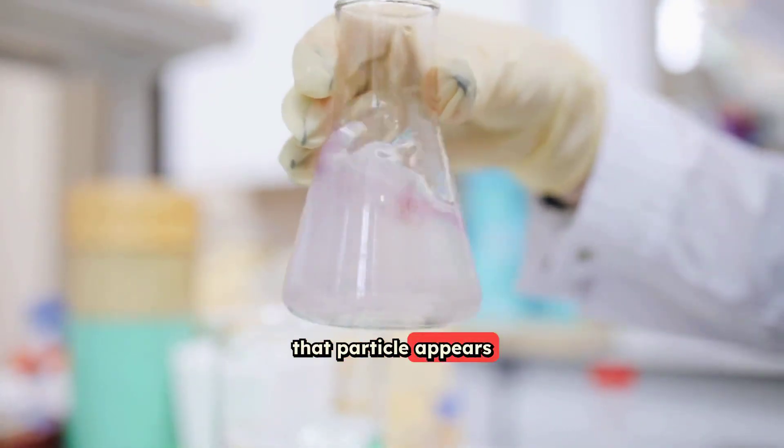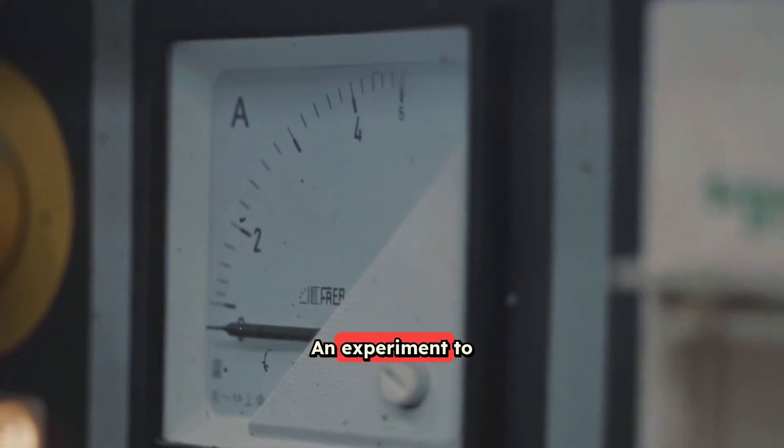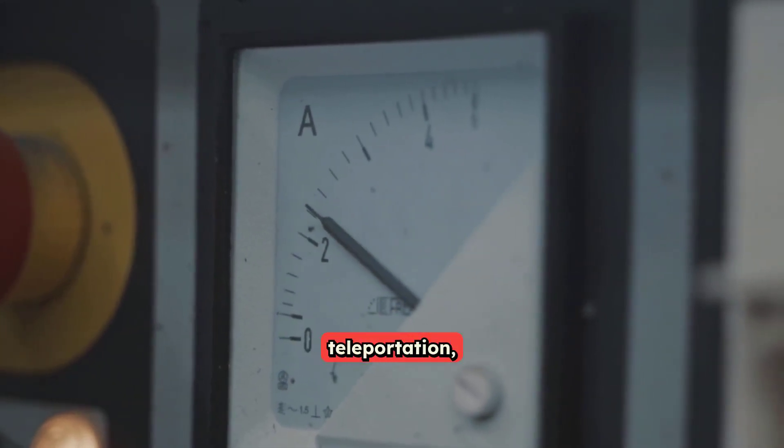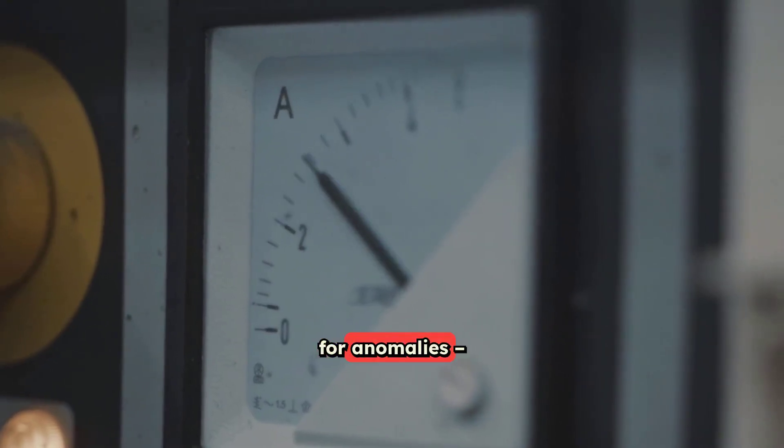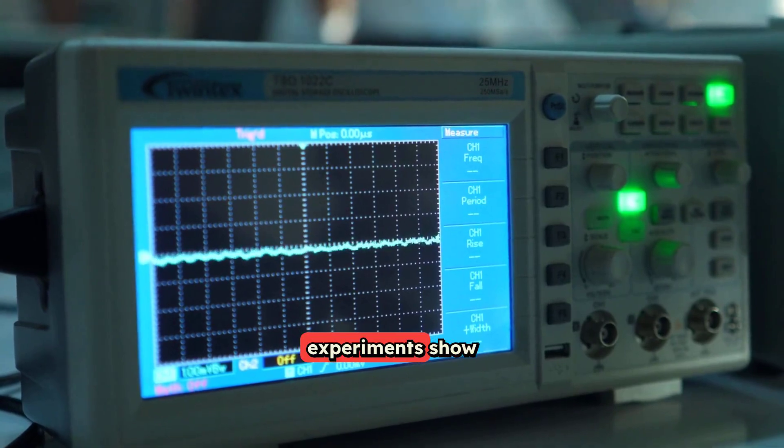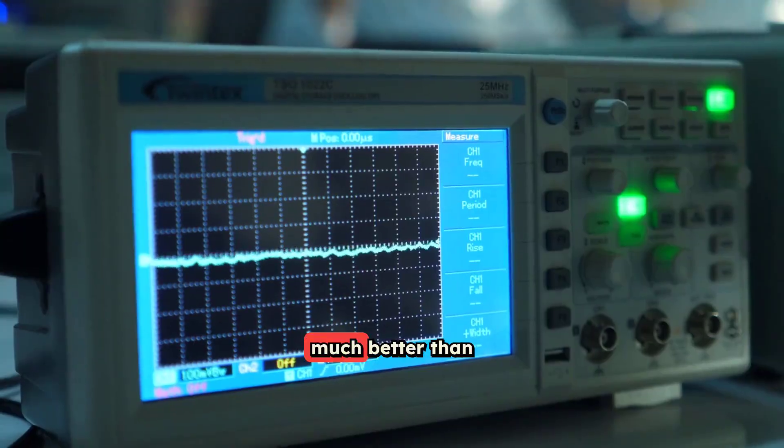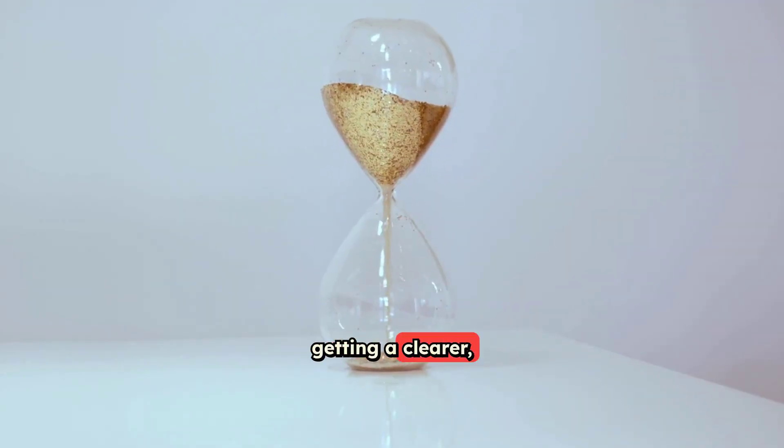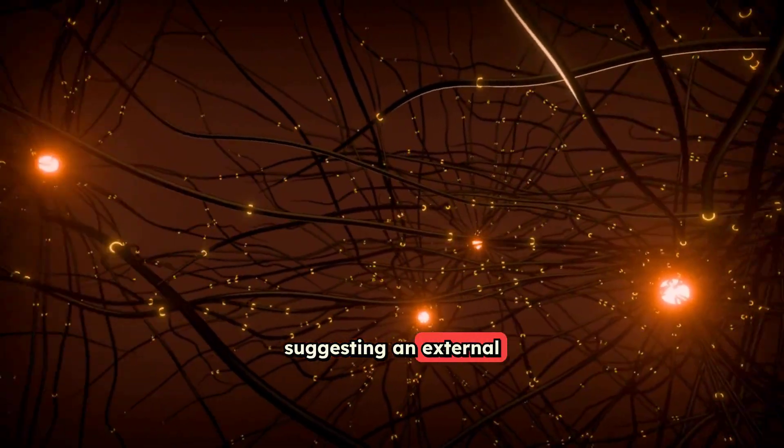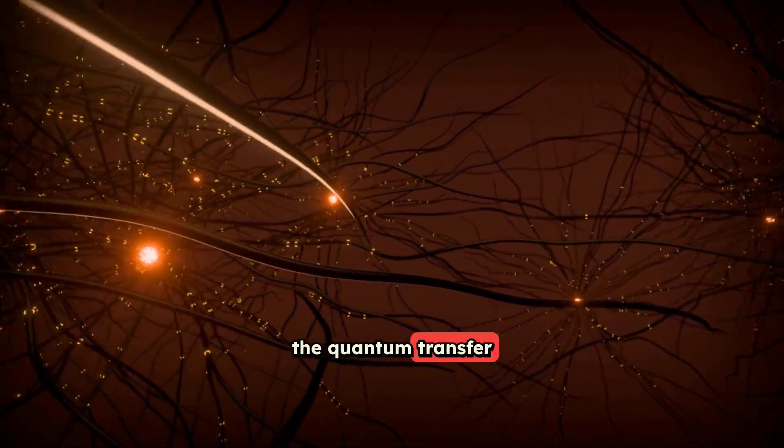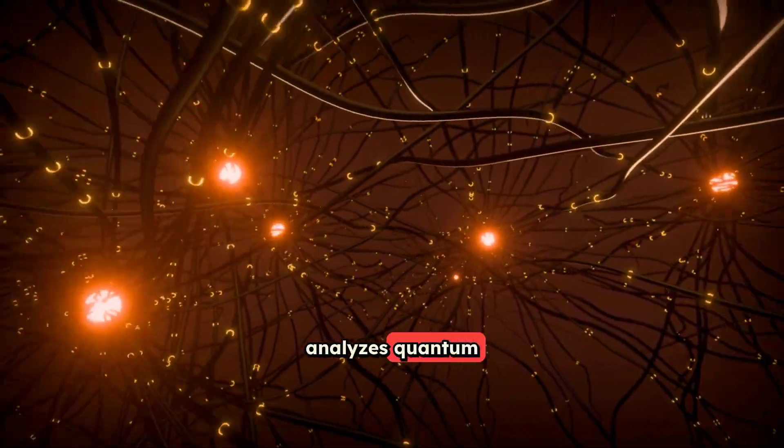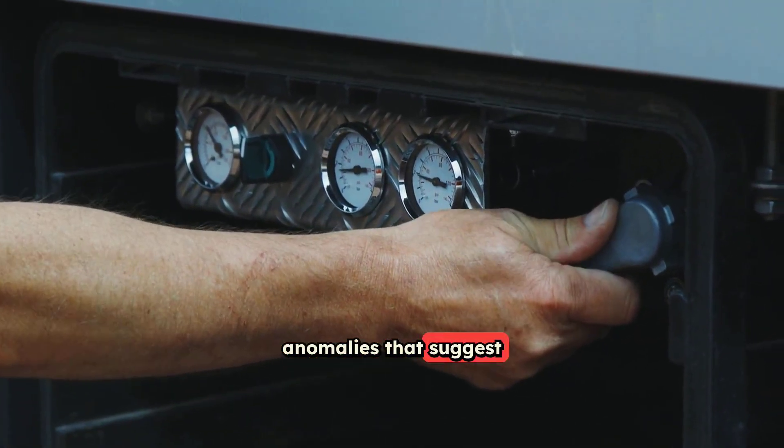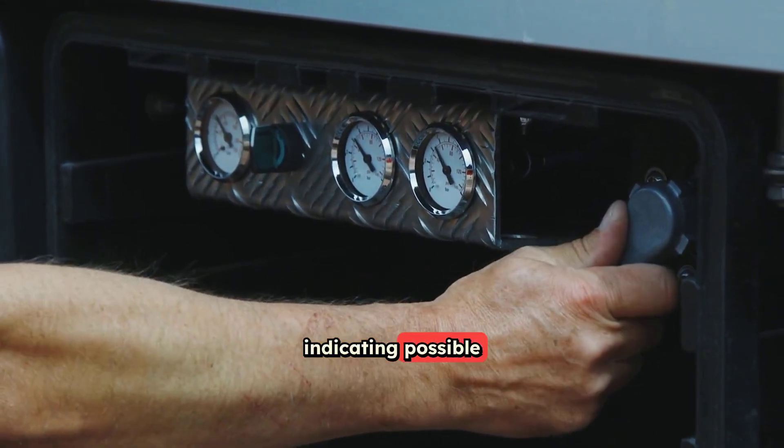An experiment to find alien messages would involve carefully analyzing how well and how efficiently we can perform quantum teleportation, especially over long distances. We'd be looking for anomalies, meaning if the results of our teleportation experiments show a level of accuracy or efficiency that is much, much better than what our current understanding of physics predicts, it could be a sign of alien interference. It would be like getting a clearer, stronger signal than should be possible, suggesting an external force is helping or manipulating the quantum transfer to send a message. This experiment analyzes quantum teleportation fidelity and efficiency, seeking beyond expected transfer rates or anomalies that suggest alien manipulation of quantum states, indicating possible interstellar quantum communication.